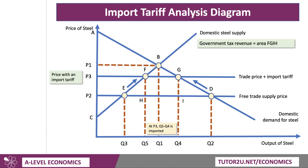Governments will also get some tax revenue. The government tax revenue from the tariff is the tax per unit multiplied by the quantity of imports. The quantity of imports is Q5–Q4, so government tax revenue is area F-G-I-H.